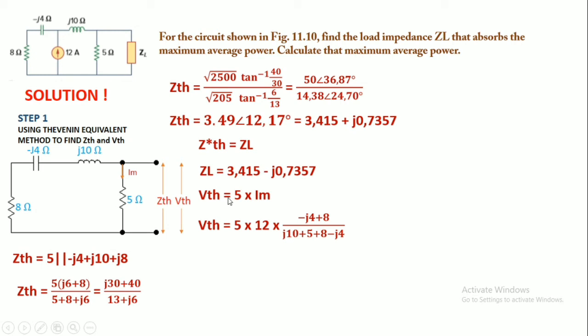And we see we got the value of Vth is 60 multiplied with -j4 + 8 divided by j6 + 13. Because it is in complex form, we're going to change it into polar form.